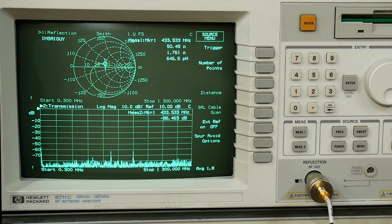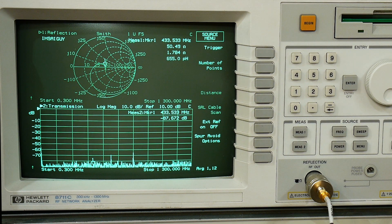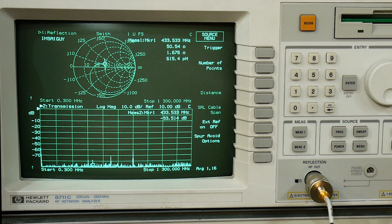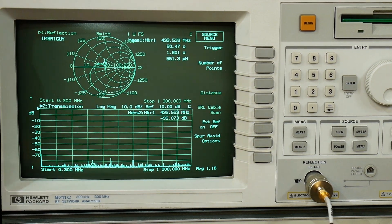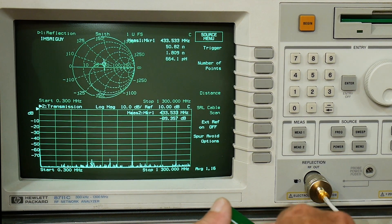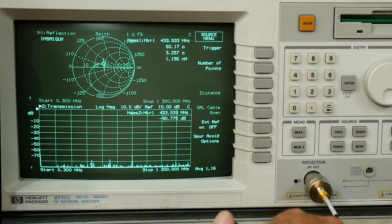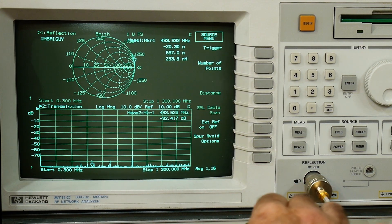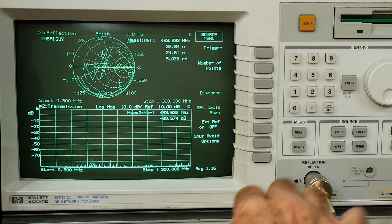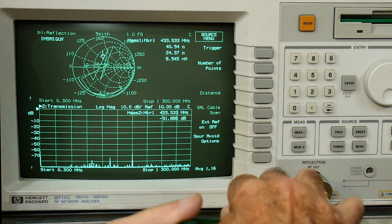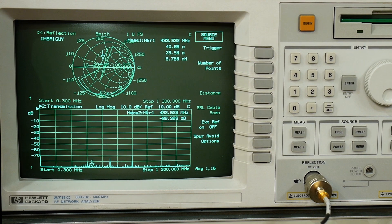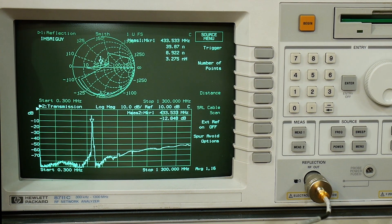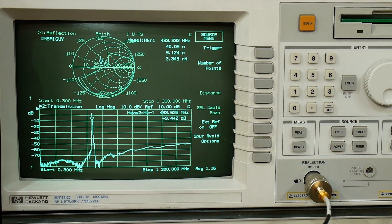Yeah what else can I say? It's a vector network analyzer, it's very cool. I guess we can do a transmission measurement. So let's hook up a filter here. There is a 4.433 megahertz filter on this board, we can hook that up. There you can see it's looking like a filter.